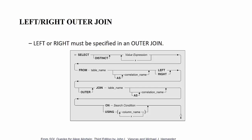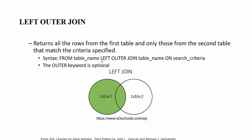In the left outer join, table one is the left table and table two is the right table. When we apply the left join, we get all the results from table one and the matching results from table two — represented by the green area in the Venn diagram.